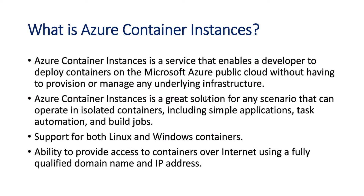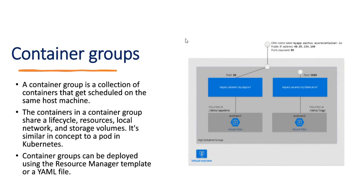ACI provides the ability to access containers over the internet using a fully qualified domain name and IP address. So if you want to access your containerized application externally, you can use a public IP address. Now here is a very important concept: container groups. A container group is a collection of containers that get scheduled on the same host machine.